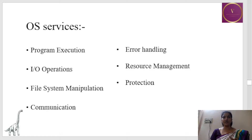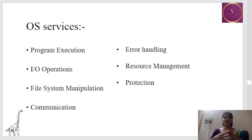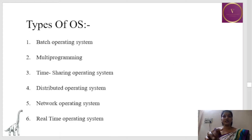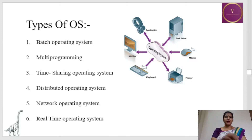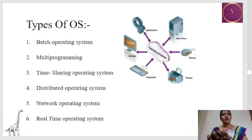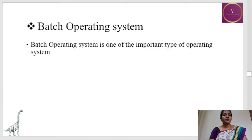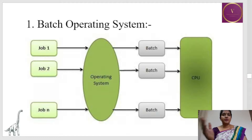So those are the OS services: program execution, I/O operation, file system manipulation, communication, error handling, resource management, and protection. The next topic will be types of operating systems. The first type we are going to see is the batch operating system, which is one of the important types.